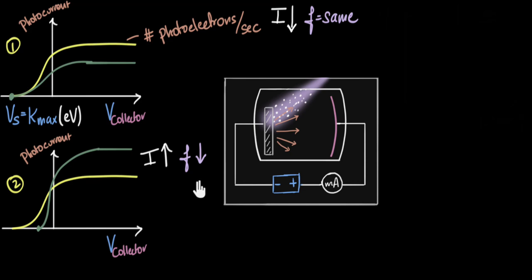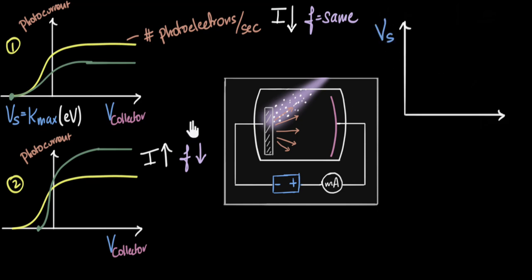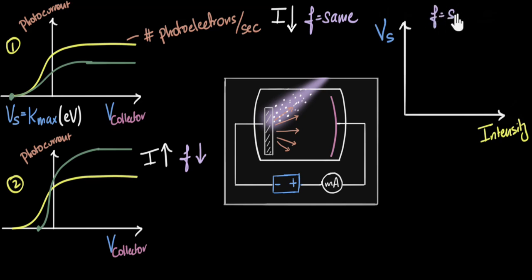Let's do two more bonus graphs. In this graph, we're going to plot the stopping voltage along the vertical versus the intensity of light. I want you to predict what this graph is going to look like, provided we keep the frequency the same — frequency is constant. Think about what we're doing with the light, and predict what the graph will look like.